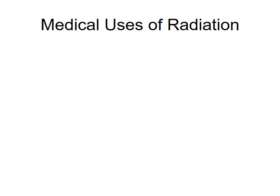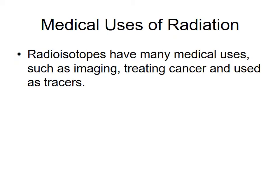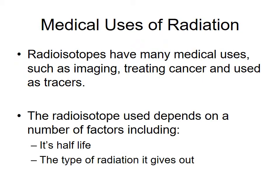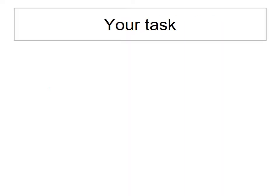One of the major uses of radiation, which you would have touched upon with your analysis of gamma rays in the previous unit, is medical uses. Radioisotopes have various medical uses, which we will go through in a little bit of detail. The choice of radioisotope is based on two things: its half-life and the type of radiation it gives out.